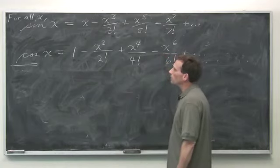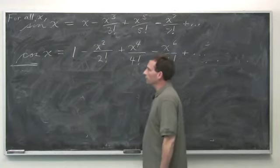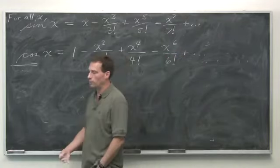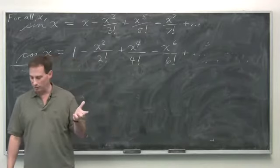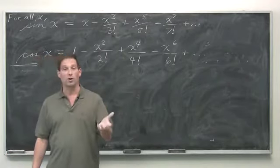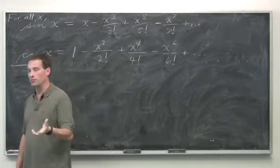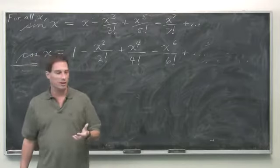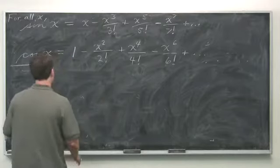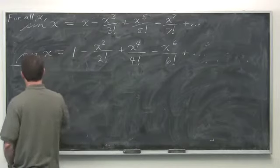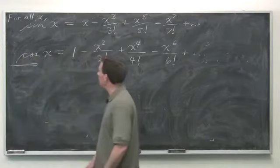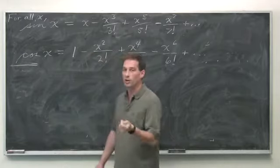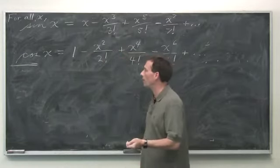This means the Taylor series for sine converges to sin(x) and the Taylor series for cosine converges to cos(x), for all x. Now we can write as equalities what before were just formal algebraic things. For sine you get all the odd powers of x divided by the corresponding factorial with alternating signs. For cosine you get the even powers including x^0 = 1, divided by the corresponding factorials with alternating signs. Both hold for all x.